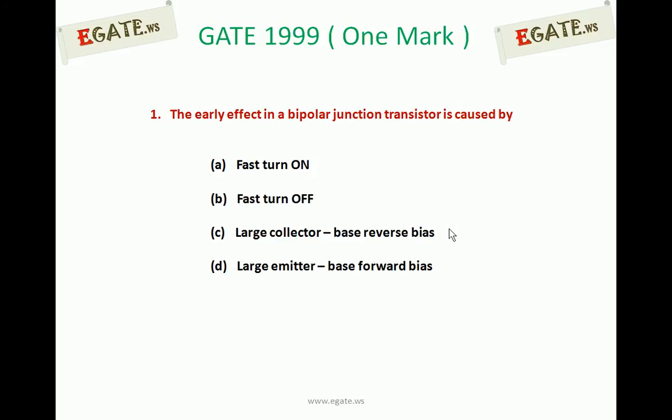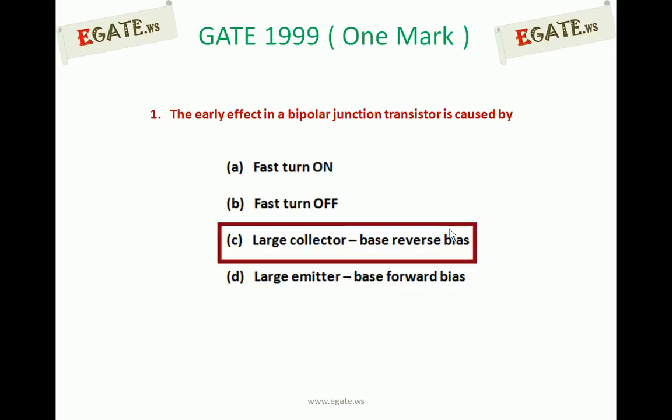The correct option is C — large collector base reverse bias. The early effect is also called base width modulation, which is a process of variation of effective base width as a result of increase in collector to base voltage when the transistor is operating in the active region. We will see the details now.